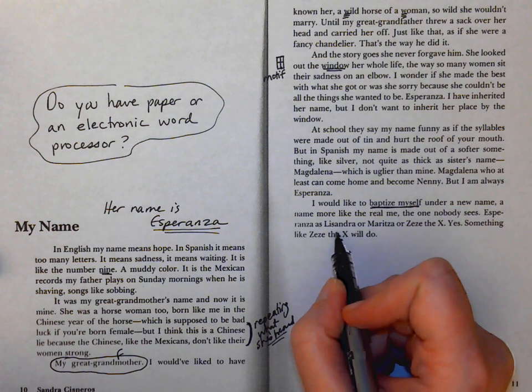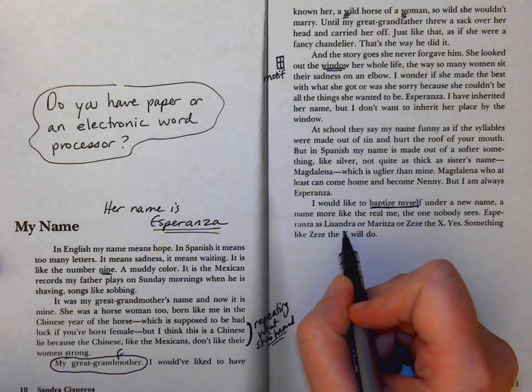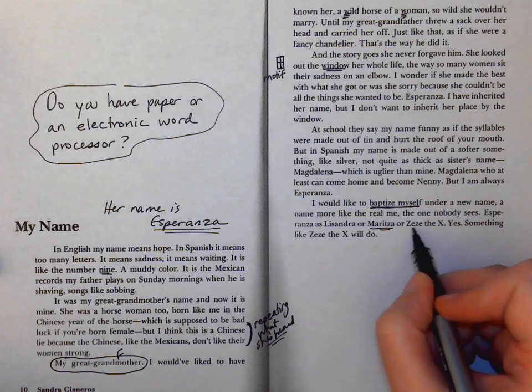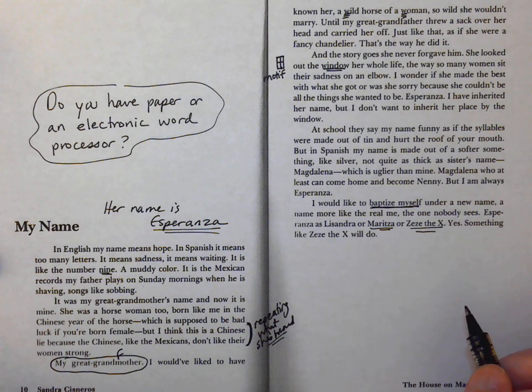Yes, something like Zezé the X will do. And notice how the words she picks are quite vibrant. Lissandra to me sounds kind of soft and sweet. Maritza, though, that's kind of dynamic, just the sound of it. Cocky, outgoing. Zezé the X is superhero. Esperanza is kind of reimagining herself as somebody much more confident, much more bold.